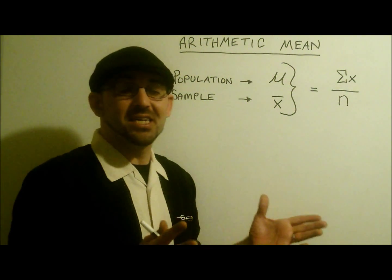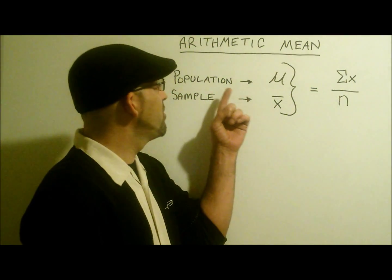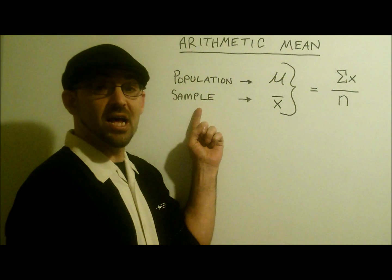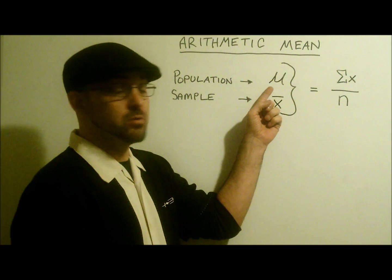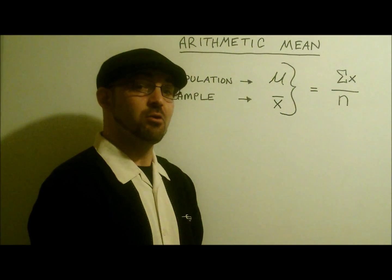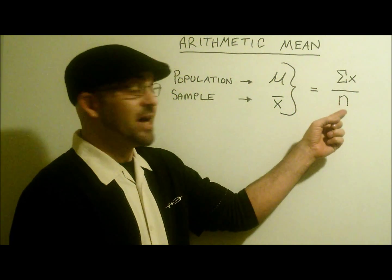The arithmetic mean is basically just an average. In stats though, we have to define whether it is a population size that we are working with or a sample size that we are working with by the Greek letter mu or x bar. In either case though, we are working with the same formula of the Greek letter sigma x divided by n.